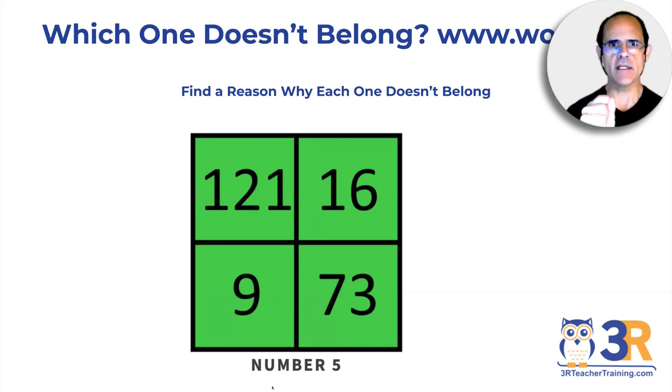So for example, why would you say that 121 doesn't belong with the other three? Three digits. Why would you say 73 doesn't belong? It's not a perfect square, it's a prime number, the others aren't prime. So you get the idea that they really get kids thinking.